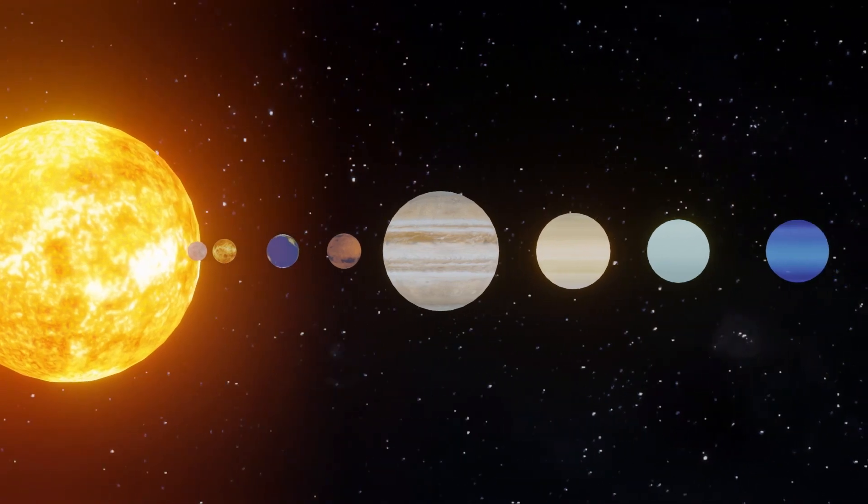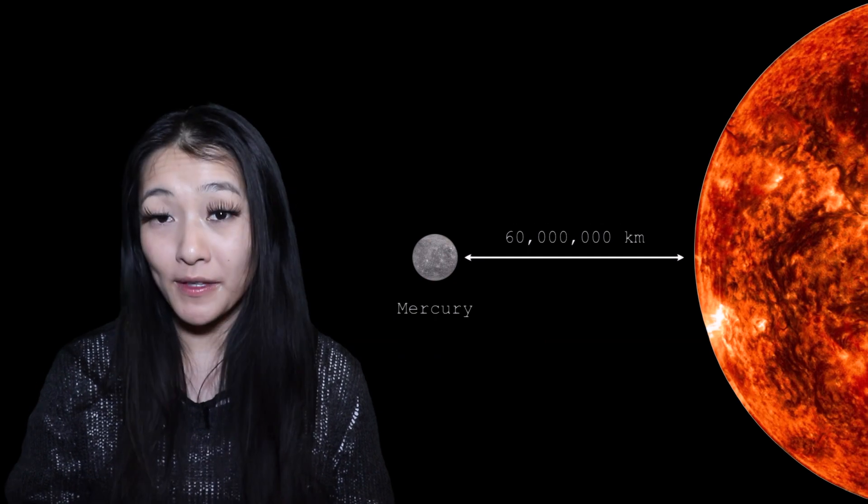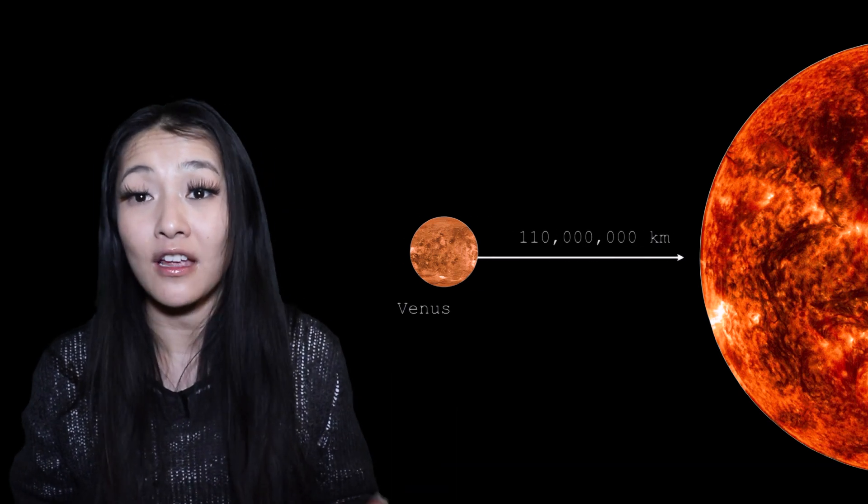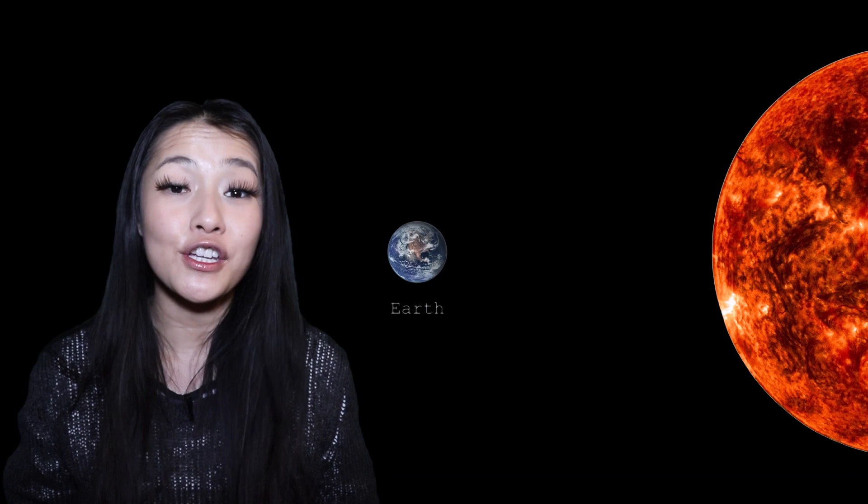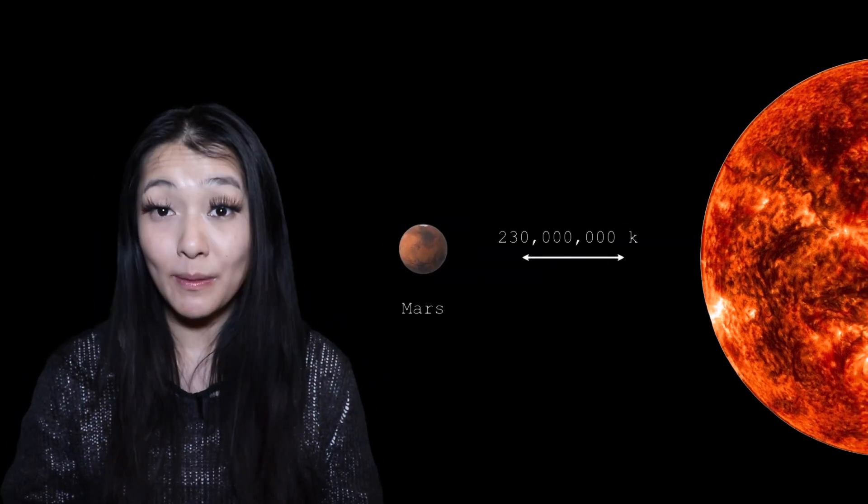The closest planet to the Sun is Mercury at 60 million kilometers from the Sun. Venus is almost twice the distance out at about 110 million kilometers from the Sun. Earth and Mars are both similar separations out at 150 million kilometers and 230 million kilometers respectively.